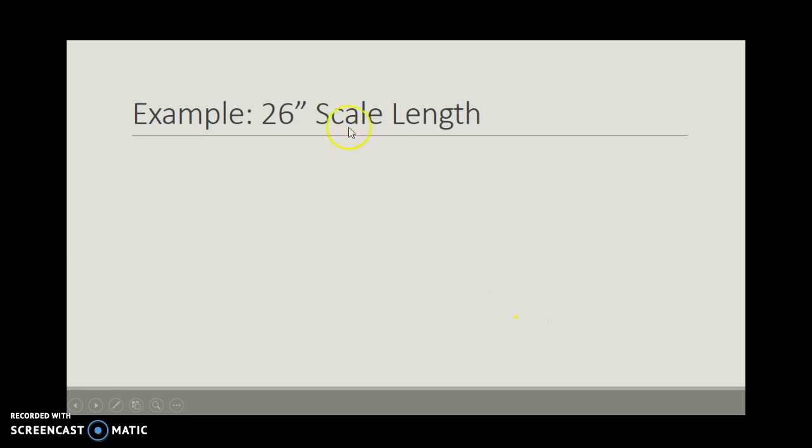So let's do an example. Suppose you have a 26-inch scale length. You're building this guitar. You want it to be a 26-inch scale length. Where should we put the 12th fret, for example, among all the other frets that are going to be on the guitar?